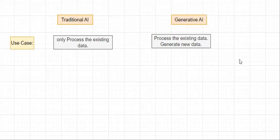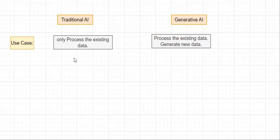Why can Generative AI models generate new data while Traditional AI models cannot? The reason is training data. Traditional AI is trained with a much smaller amount of data compared to Generative AI models.